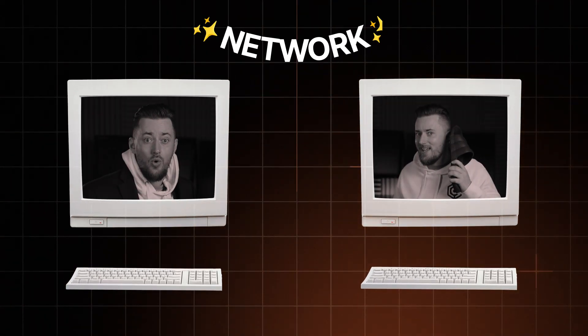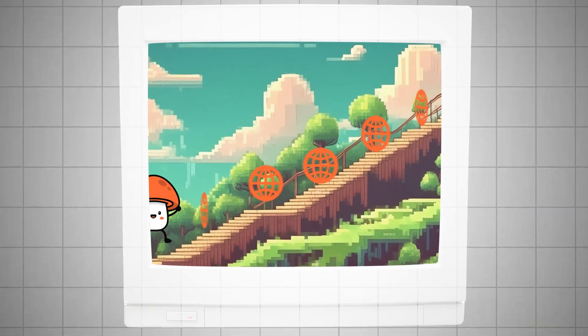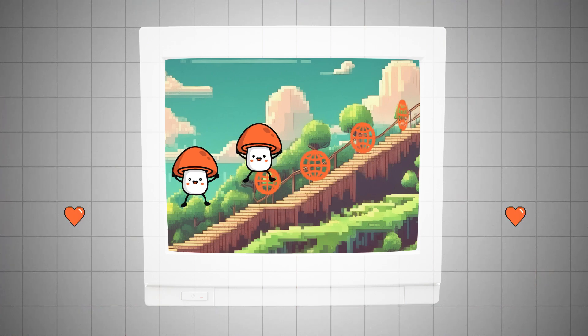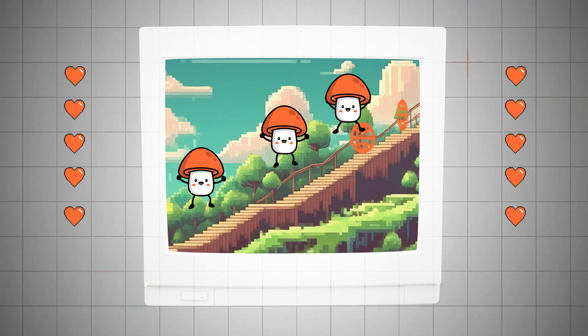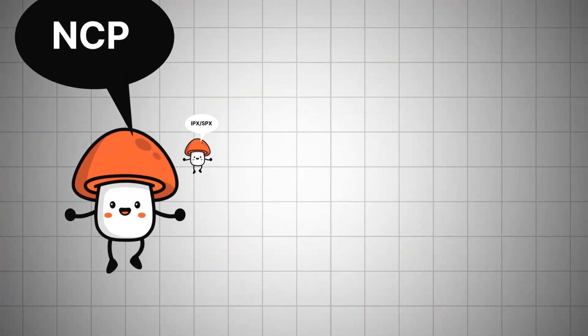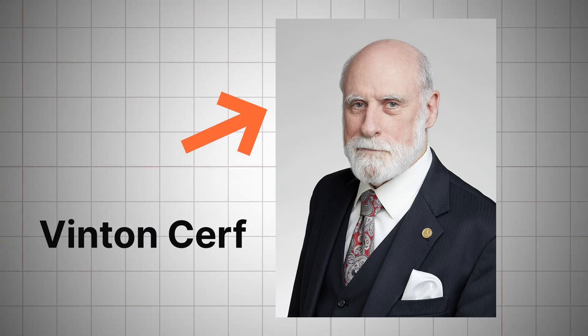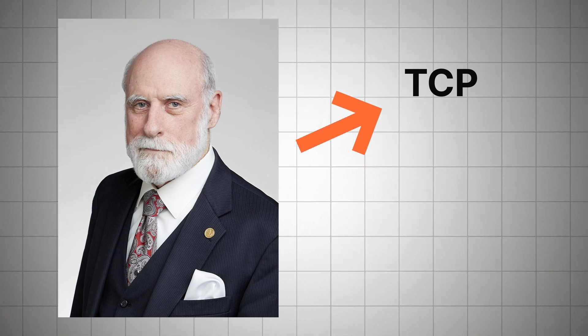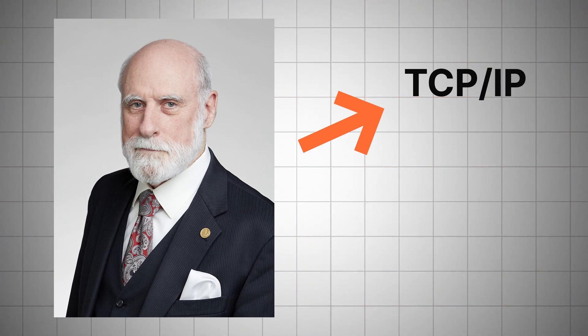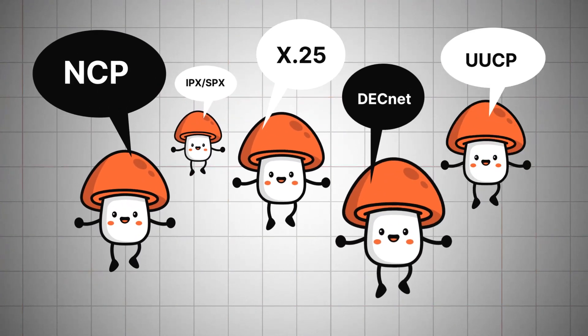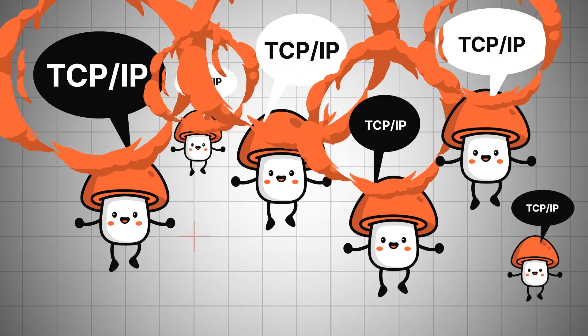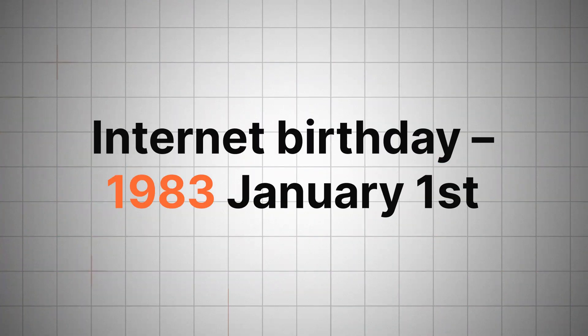Now obviously computers levelled up through the years, so more and more networks started popping up like mushrooms. Problem was, these mushrooms all communicated in different languages. But then this guy introduced the Transfer Control Protocol. Using it, all the beep beeps were translated into one universal language. And this language, plus all the wires and computers, is your main answer to what the internet is.